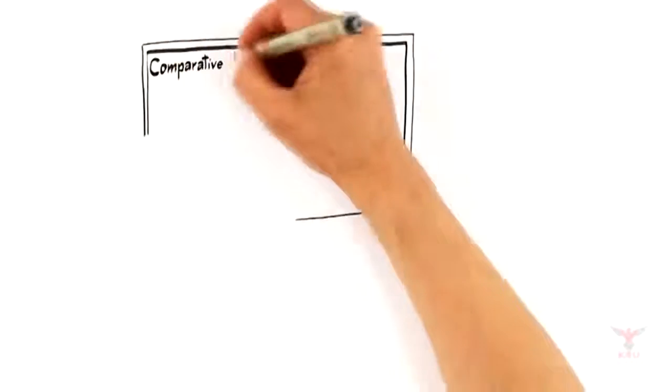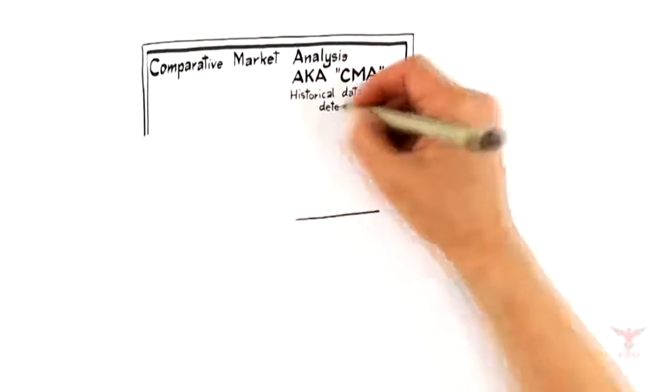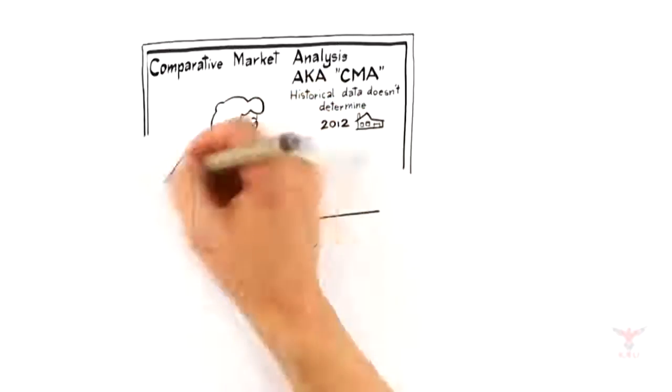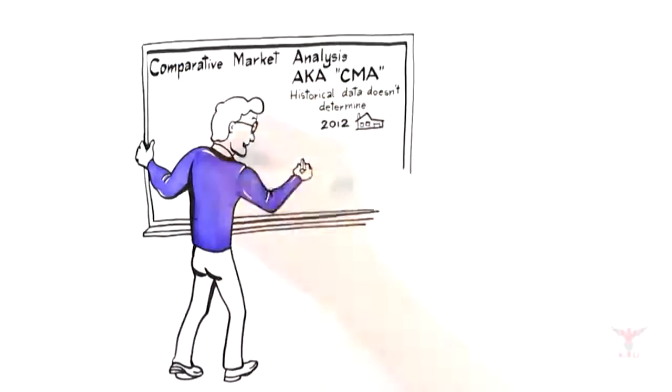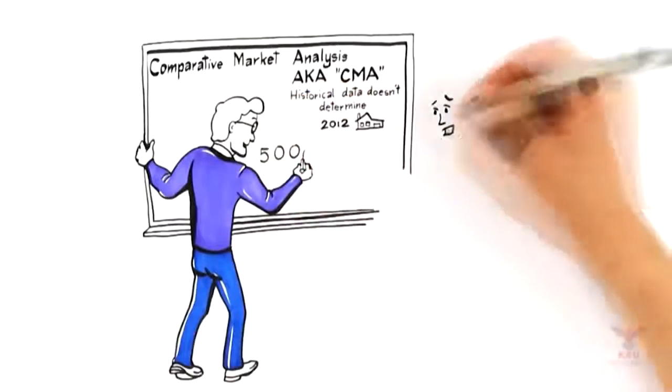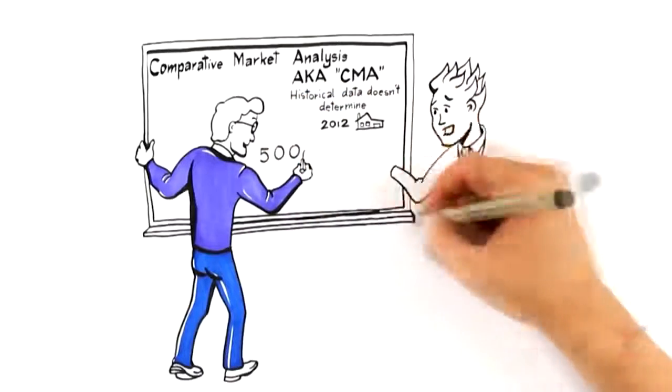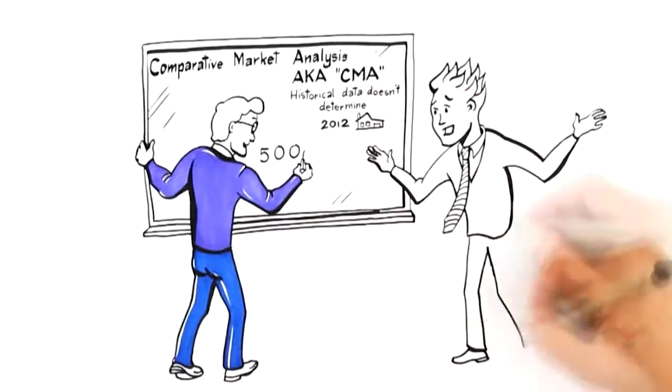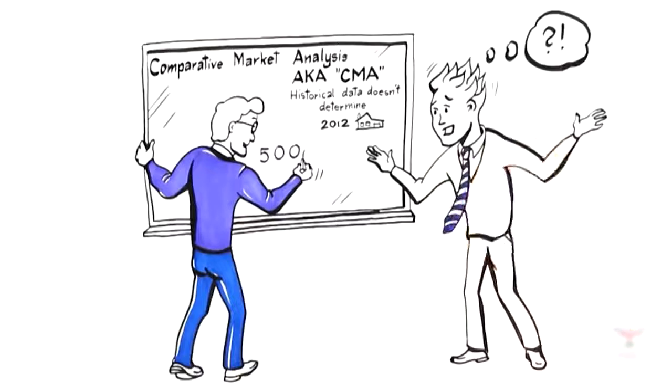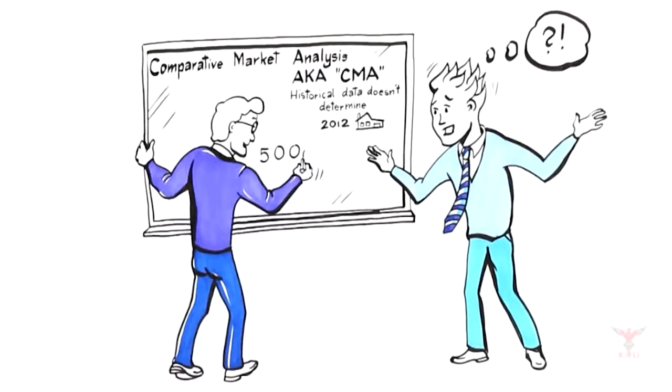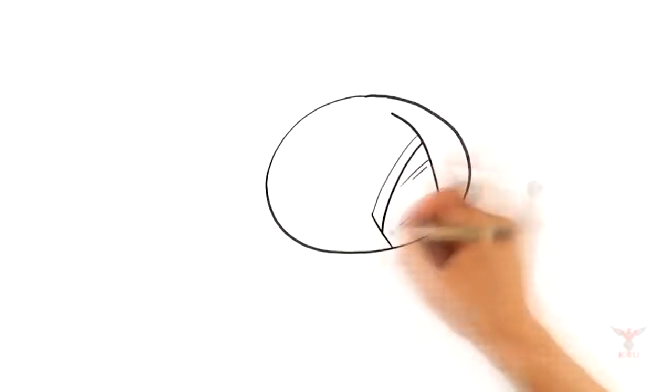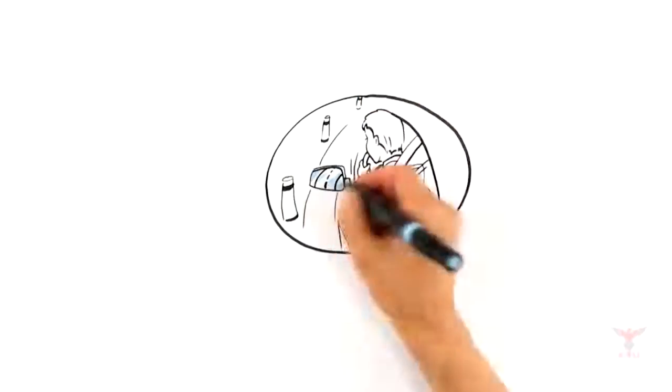So let's start with number one, pricing expertise. Traditionally, agents price homes using what is called a comparative market analysis, also known as a CMA. This establishes the value of your home by comparing it to historical sales. What most agents don't realize is that historical data doesn't determine how you should position your home in today's market to attract the highest offer. This would be like driving your car while looking in the rearview mirror.